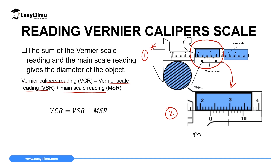The main scale reading is obtained by going to the zero mark of the Vernier scale, then moving up on the main scale to read the value which is opposite and to the left. In this case: 2.1, 2.2, 2.3 — so the main scale reading is 2.3 centimeters. Then you read the Vernier scale on the value that coincides with the main scale.